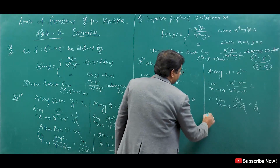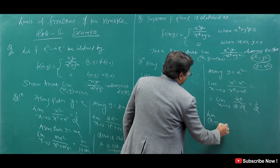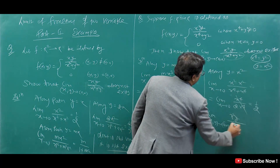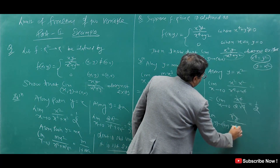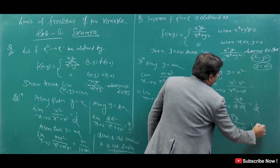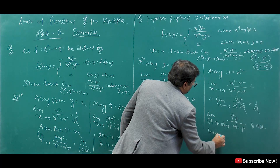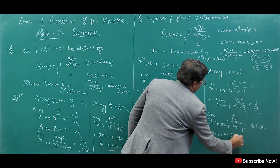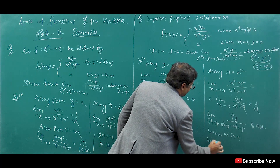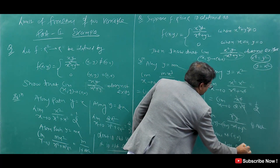Therefore the limit of x²y/(x⁴ + y²) as (x,y) → (0,0) is not unique at (0,0), so it does not exist.